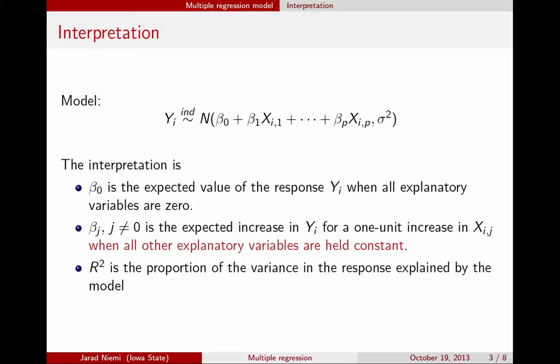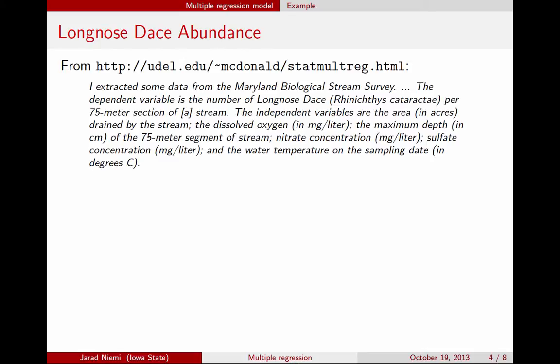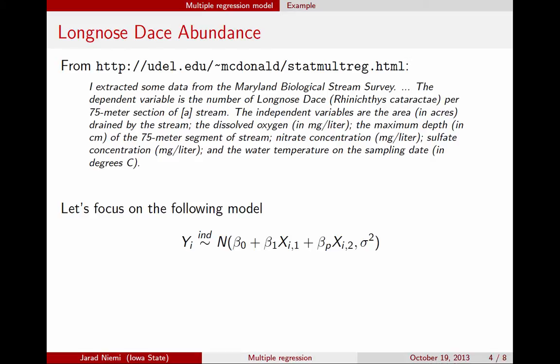Let's get into an example. The dependent variable or response is the number of long-nosed dace — a kind of fish — in a stream. Variables we might think are important include the area drained by the stream, dissolved oxygen, maximum depth, nitrogen concentration, sulfate concentration, water temperature, and so forth. For this mini-lecture, we'll simplify and only consider two explanatory variables, so p should be 2.